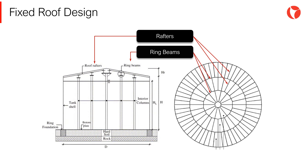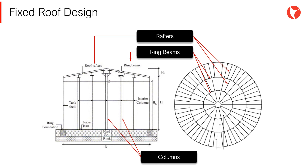The typical configuration of the supporting structure is shown, where the rafters are the elements supporting the roof plates. The ring beams receive the loads of all rafters in the frame. Finally, the columns support the ring beams of the frame and transmit the loads to the ground or foundation. Depending on the diameter of the tank and the rafter length adopted, there will be as many intermediate beams as necessary.